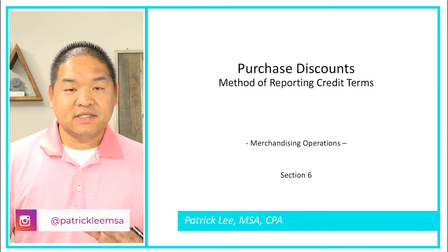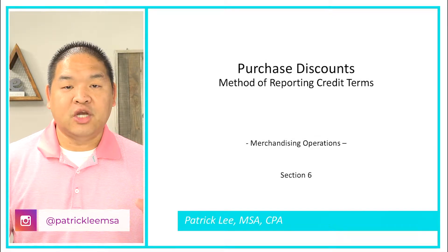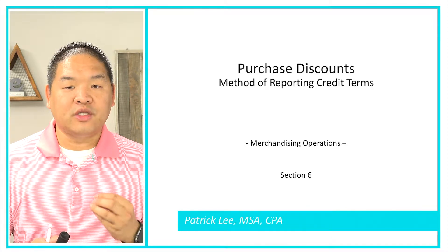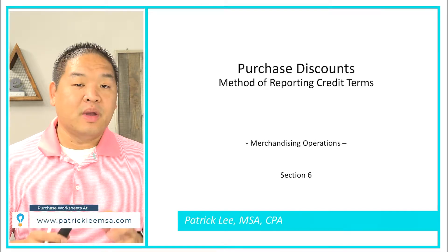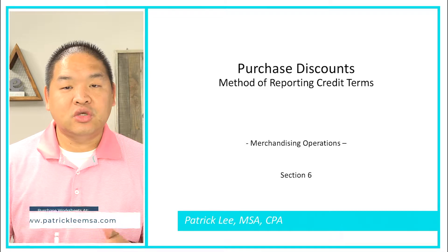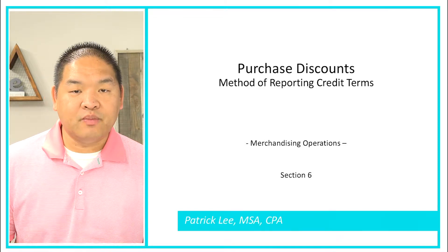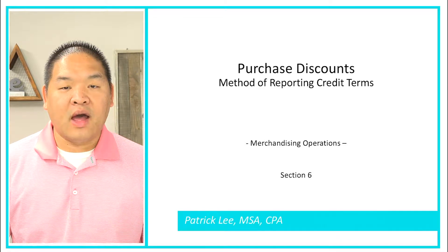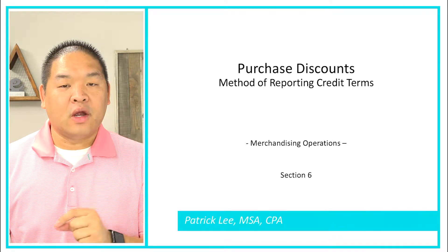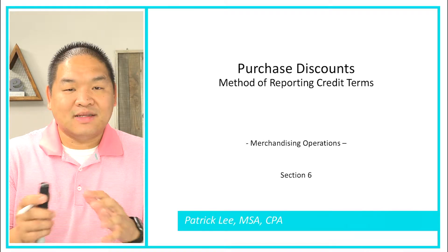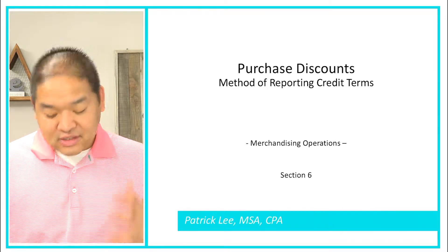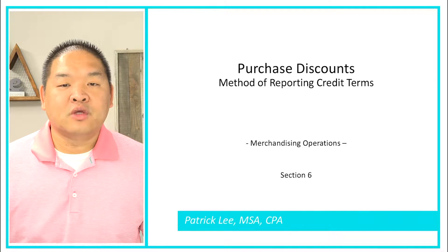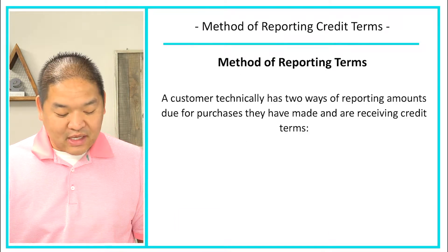In this lesson we're going to be talking about purchase discounts a little bit more, which is what we just finished in the last lesson. But we're going to talk about the two different methods that we use to book those transactions into our books. When we buy product from our vendor, there are two ways we can report that based on whether or not we are going to take advantage of the discount.